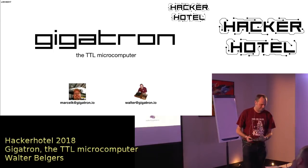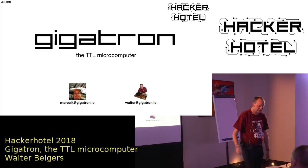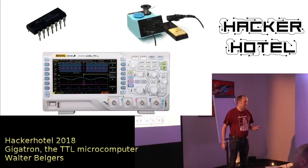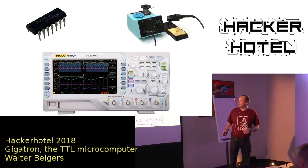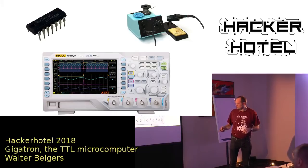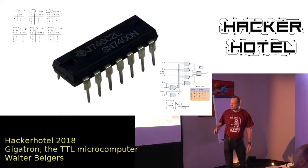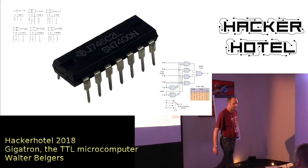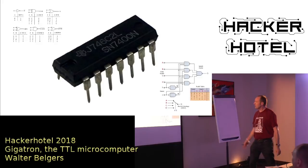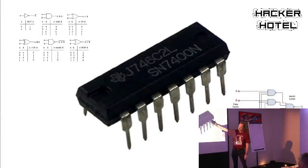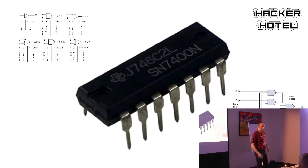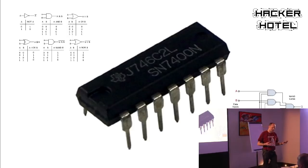This is the actual system. This all started just over a year ago when Marcel started the project. He bought a bag of microchips, a scope, and a soldering iron. These microchips are quite old — these series were built in the 70s, used in the 70s and 80s. You can still buy them. They're fairly simple: they contain AND gates, NOR gates, shift registers, counters, stuff like that.